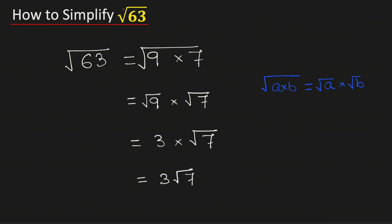Therefore, square root of 63 in its simplified radical form is equal to 3 root 7, and this is our final answer.